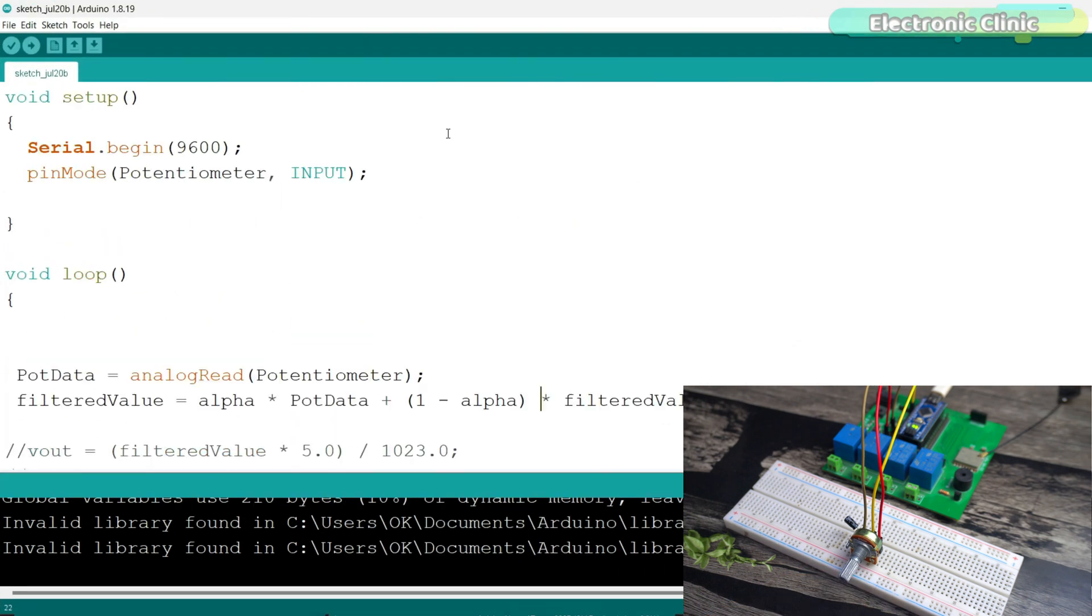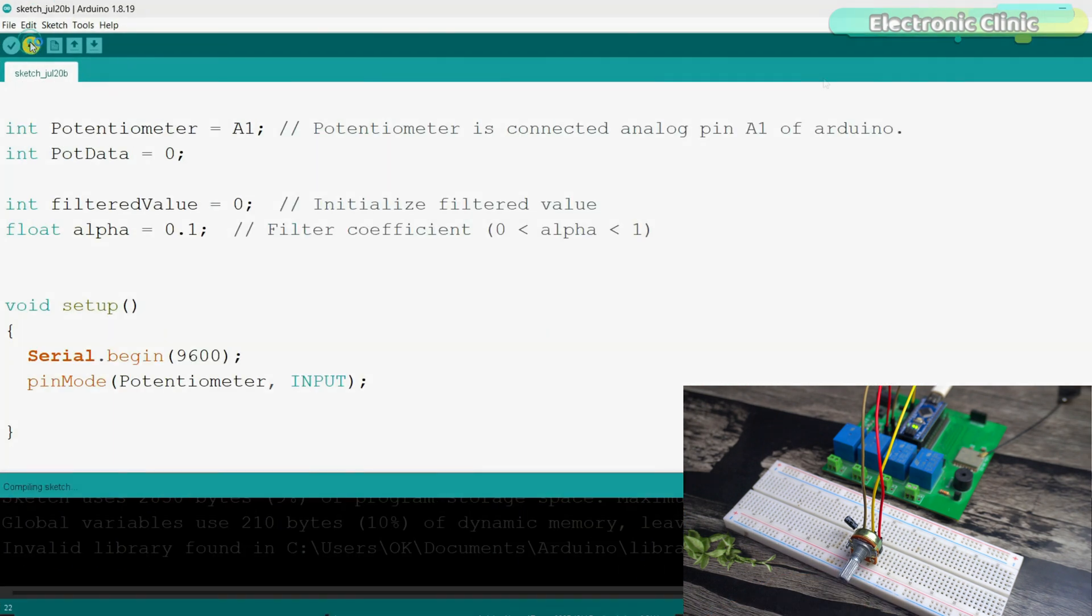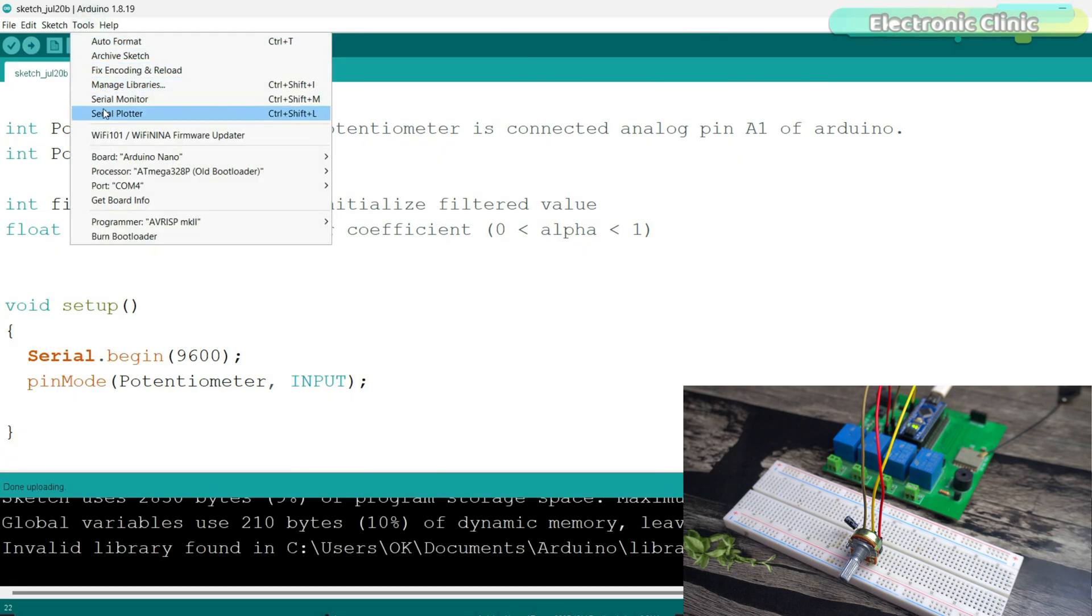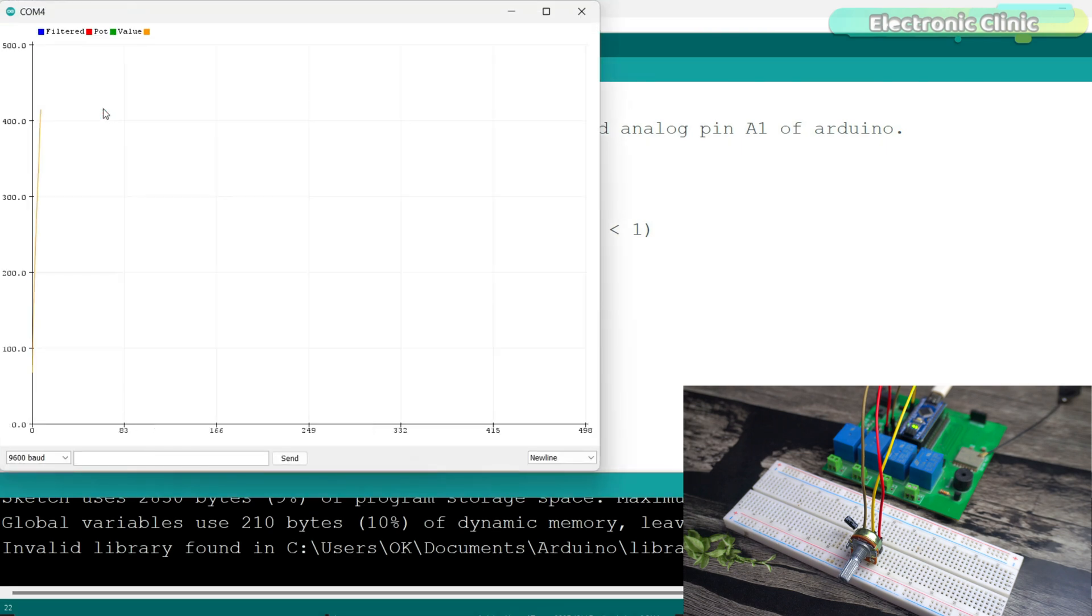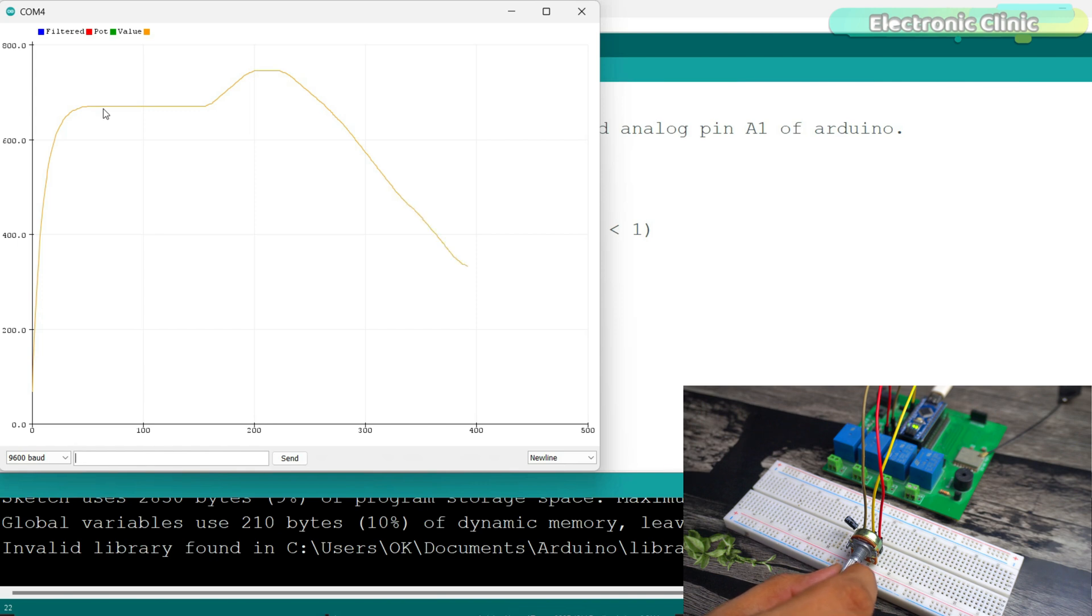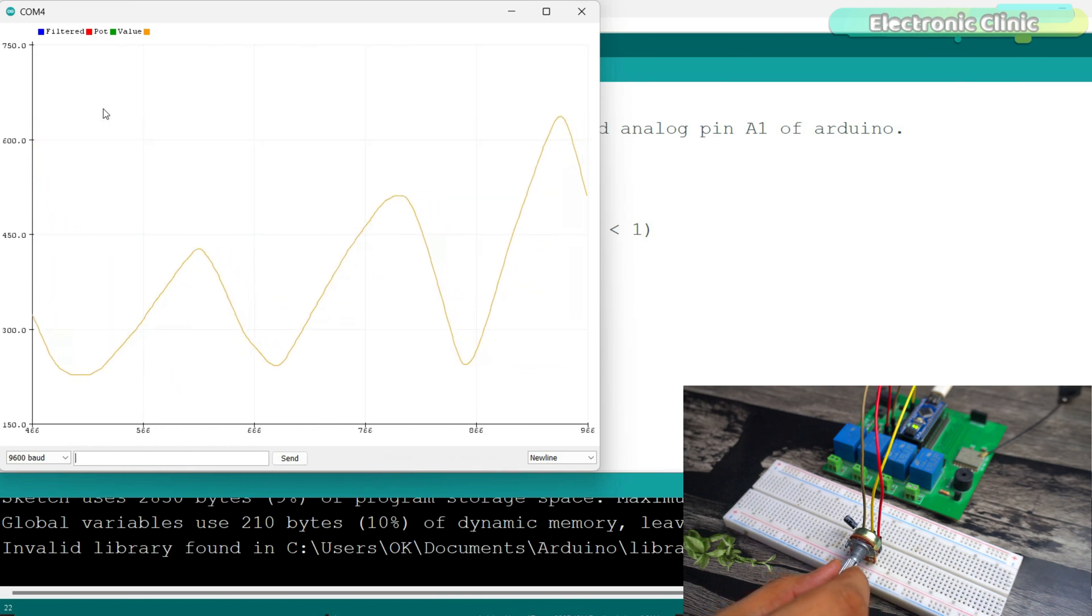Now let's upload the third program. When you have a low-pass filter on the hardware side and also implement a filter in the program, you get an almost perfectly smooth value that you can completely rely on.